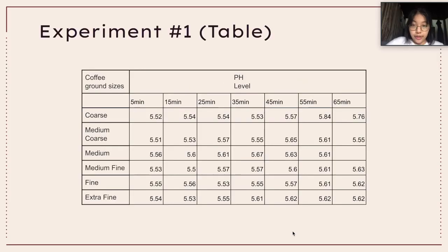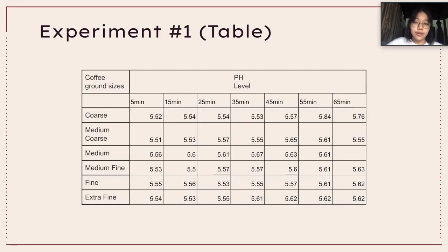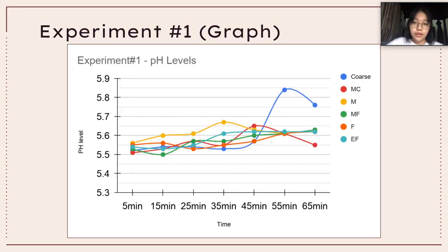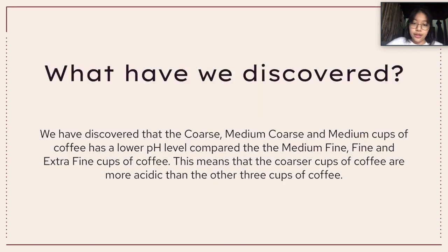Now, on to the results of the experiment. We have four sets of data accompanied by four graphs, and the four graphs and data come from the three times we did the experiment and the one average results. We will now be talking about the key findings and explanations for those key findings.